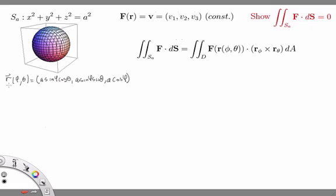And then it's straightforward to check, I mean it's just a matter of doing the computation, that when I do r sub phi cross r sub theta, I get a squared sine phi times r itself. So I get this vector multiplied by a squared sine phi, and so